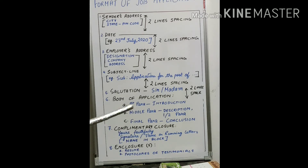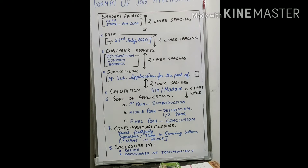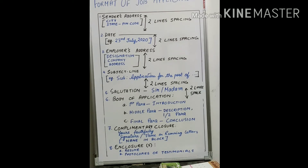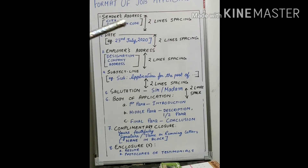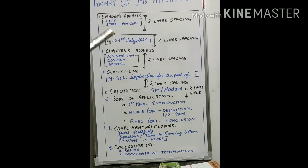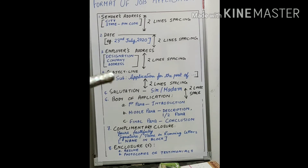What do you understand by sender's address? It is the address of the person who is writing the letter — the writer's address. The information you are supposed to put in for sender's address: you have to mention the name of the city and the state along with the pin code. If you don't write the full six-digit pin code, always try to mention at least the last one or two digits of the pin code of that particular city.